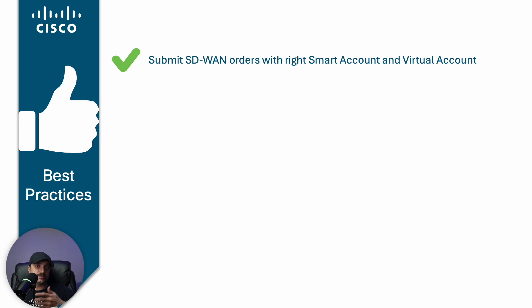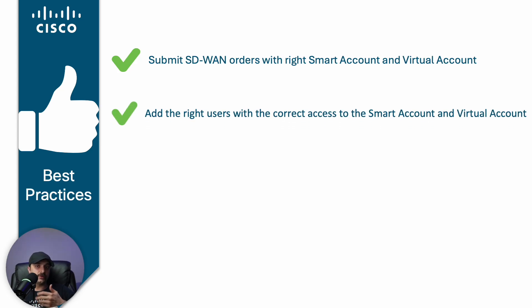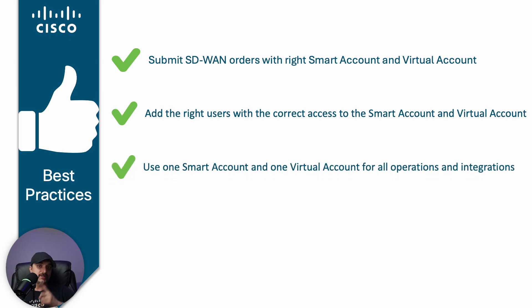Secondly, as discussed earlier, smart accounts and virtual accounts have different roles that provide various permissions to users. Always make sure that users have the appropriate access to the accounts to perform their roles effectively. Another important recommendation is to use a single smart account and virtual account for all operations and processes for Catalyst SD-WAN. Although some regulations or organizational structures might require using different smart accounts and virtual accounts for applications like PnP Connect or CSSM, sticking to a single one simplifies all processes significantly.